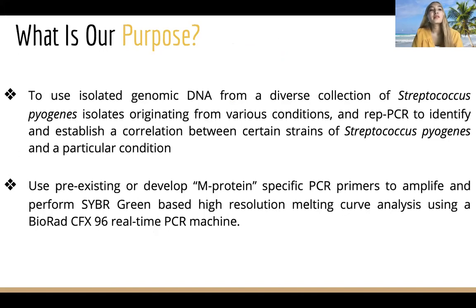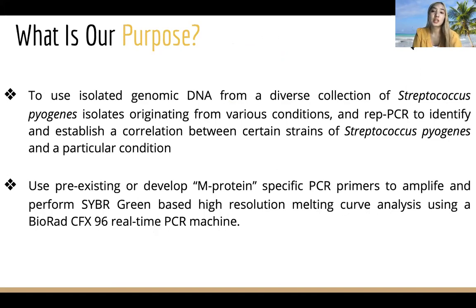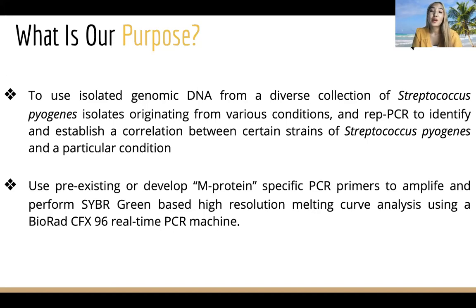Our purpose is to use isolated genomic DNA from diverse collections of Streptococcus pyogenes isolates originating from various conditions, and to use real-time PCR to identify and establish a correlation between certain strains of Streptococcus pyogenes and particular conditions. We are using pre-existing or developed M protein-specific PCR primers to amplify and perform SYBR Green-based high-resolution melt curve analysis using the Bio-Rad CFX96 real-time PCR machine.